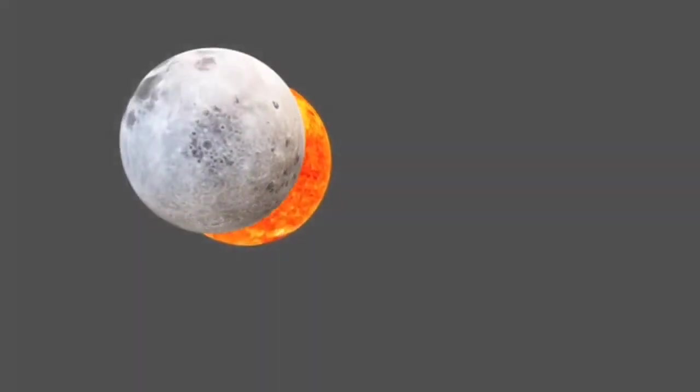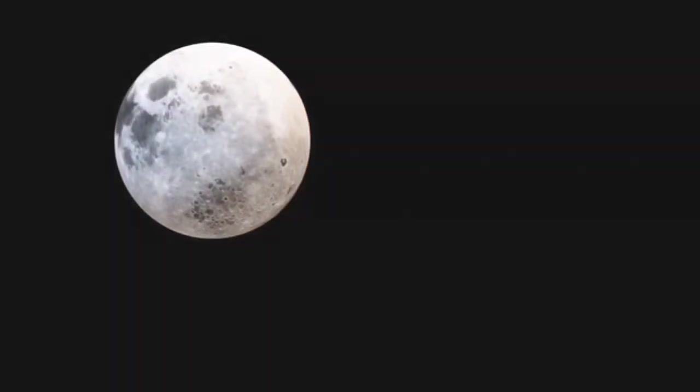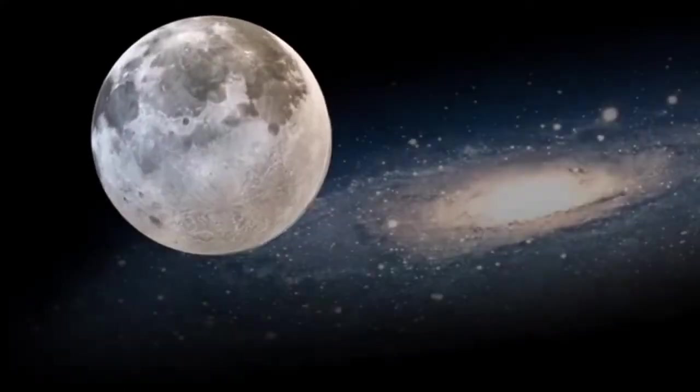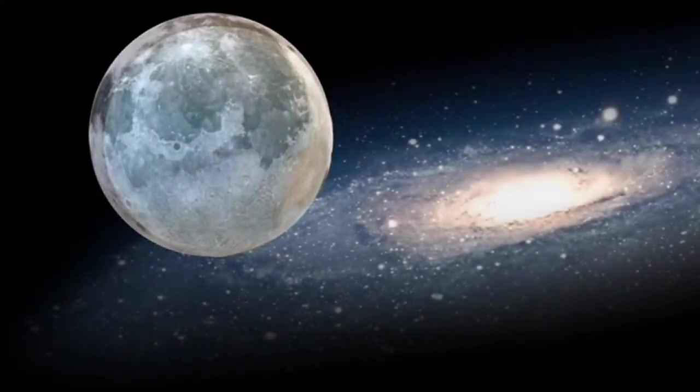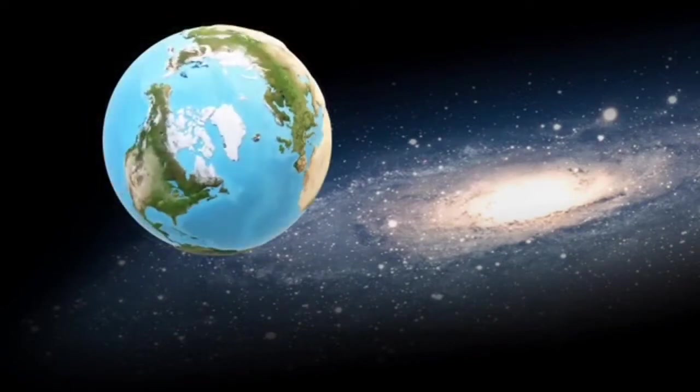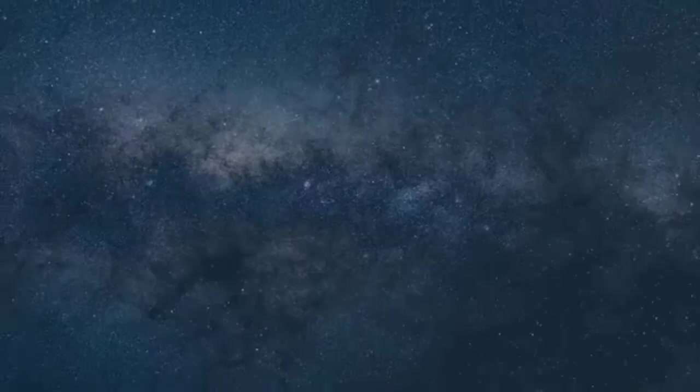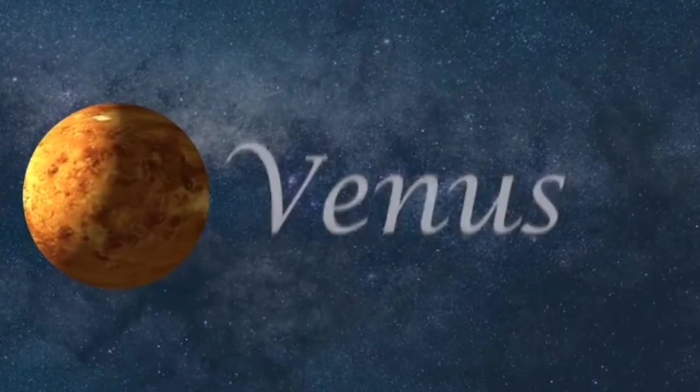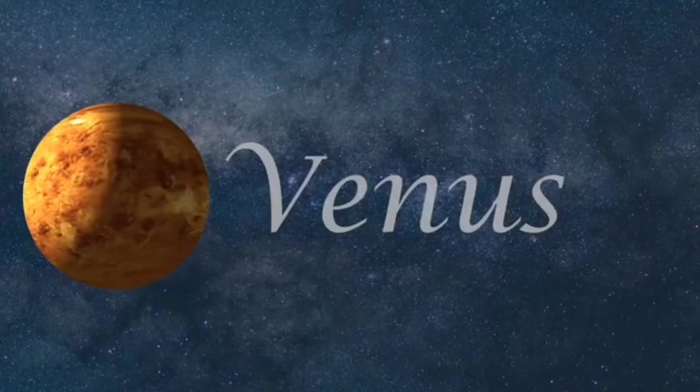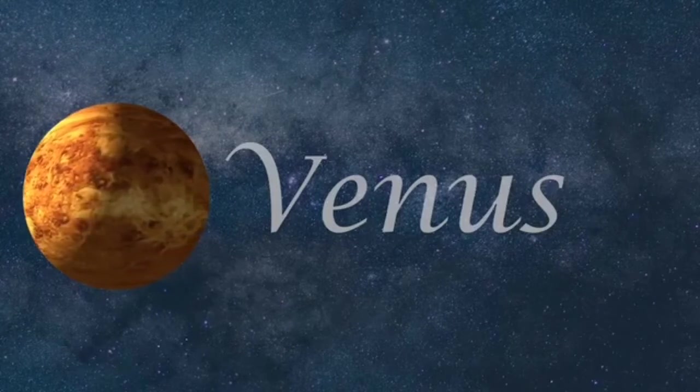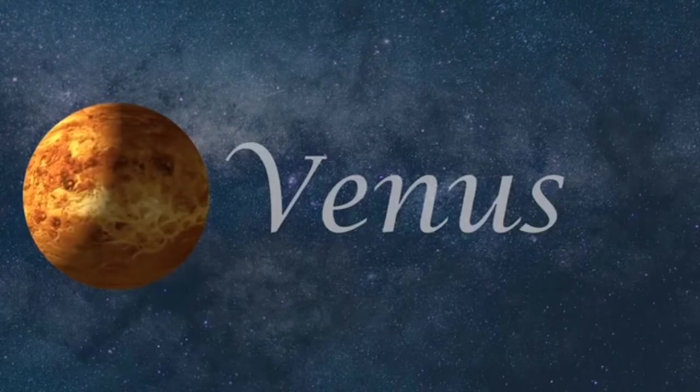It was Edmund Halley, famous for predicting the return of the comet that bears his name, who three centuries ago found a way to measure the distance to the sun and the planet Venus. He knew that the planet Venus would very rarely, every 121 years, pass directly between the Earth and the sun.